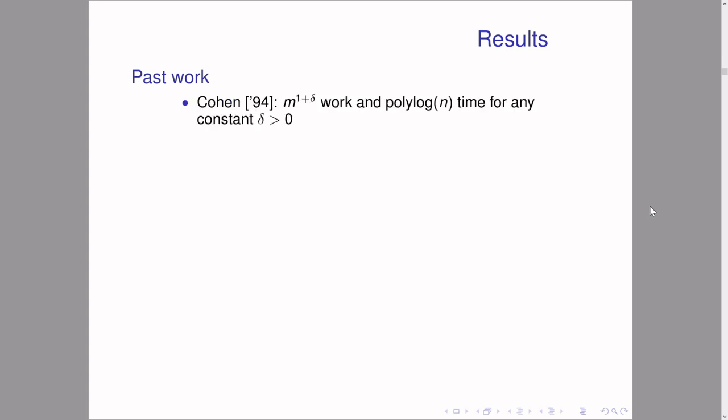This problem in the parallel setting has seen a lot of work in the past. One well-known result is Cohen's result, which shows that the approximate SSSP problem in parallel can be solved essentially optimally. To prove the result, Cohen introduced the concept of hopsets — edges that shortcut the graph in order to make an approximate shortest path from s to any vertex v contain only a small number of edges. This ensures that only a few steps of Bellman-Ford are needed before all distances are approximate.